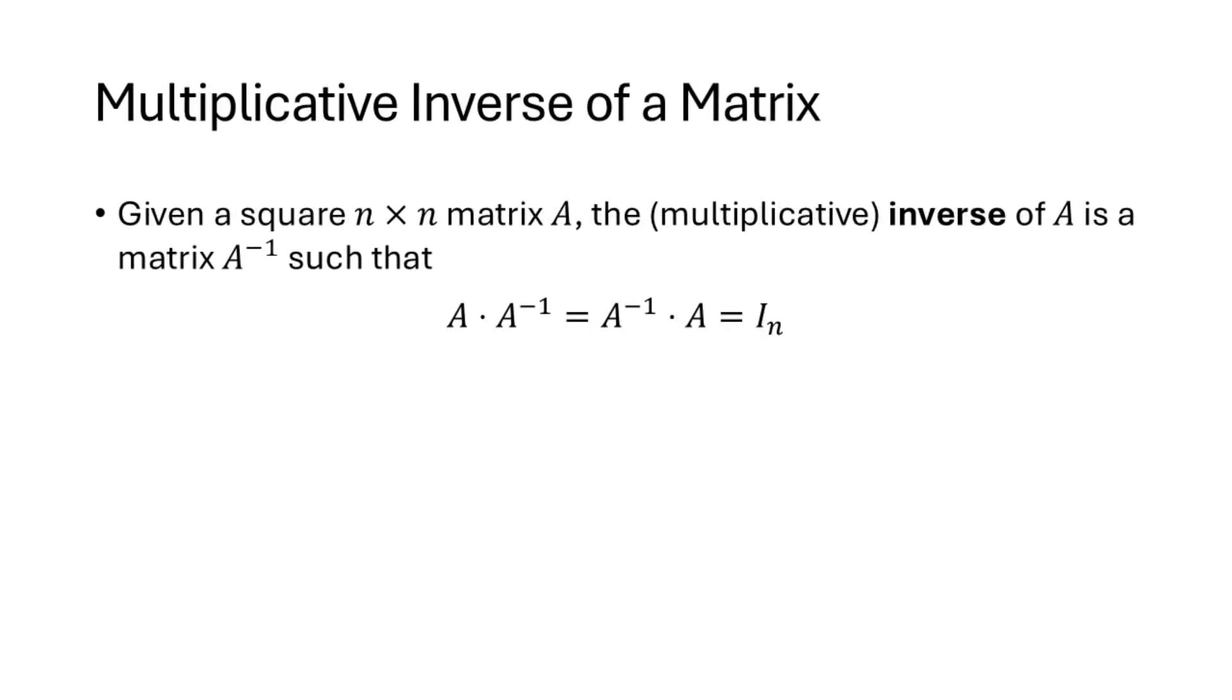The definition of inverse is that given a square matrix A, and we talked in the previous lecture about why the matrix has to be square for this to make sense, the multiplicative inverse of A is another square matrix of the same size, which we write A inverse or A to the minus 1, where A times A inverse is equal to A inverse times A, which is equal to the n by n identity matrix.